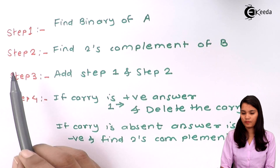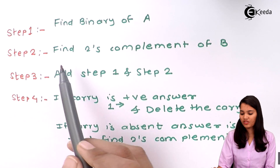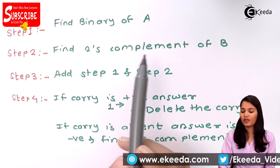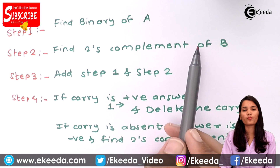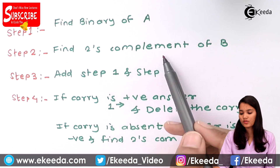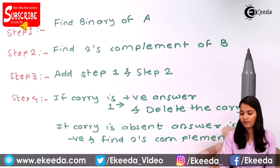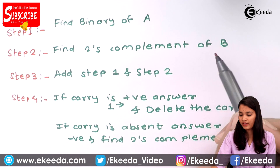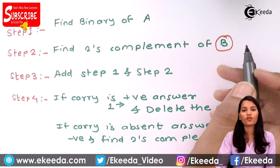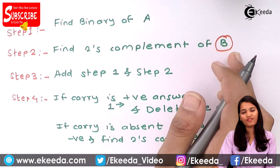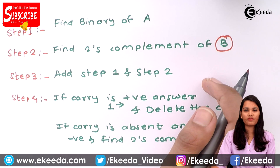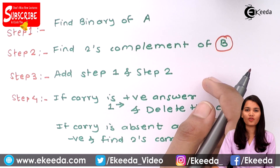The second step is to find out the 2's complement of B. To find the 2's complement of B, first we find the 1's complement of B and then add 1 to it, so that we get the 2's complement.